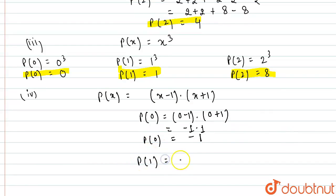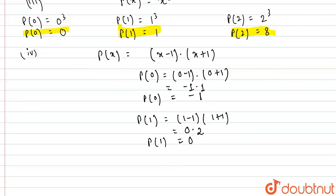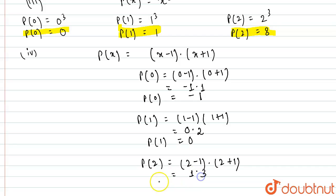Now p(1) will be (1 minus 1) times (1 plus 1). So 1 minus 1 is 0, into 1 plus 1 is 2, so I am getting p(1) as 0. Now p(2) will be (2 minus 1) multiplied by (2 plus 1), or 1 multiplied by 3, so p(2) is 3. Finally, for this given fourth polynomial, I have found out p(0), p(1) and p(2).